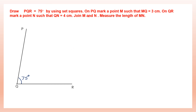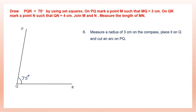On PQ mark a point M such that MQ is 3 centimeters. Measure a radius of 3 centimeters on the compass, place it on Q, and cut an arc on PQ. The arc cuts PQ at 3 centimeters. Mark that intersecting point as M — where the arc and the line meet — and name it M according to the question.